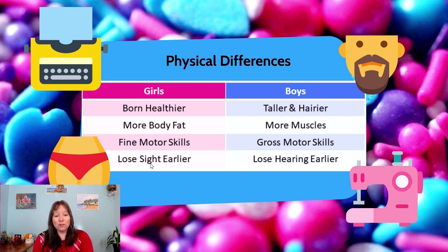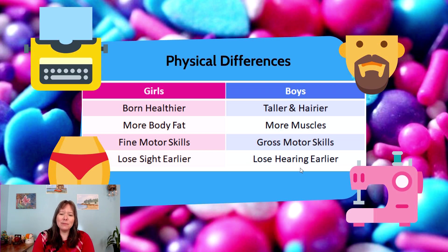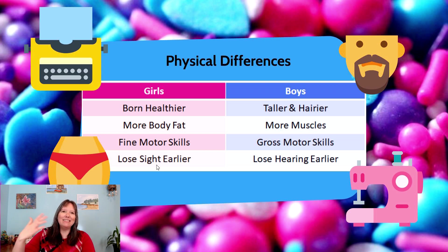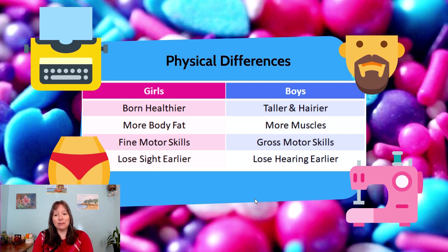Girls tend to lose their sight earlier and boys tend to lose their hearing earlier. This may have something to do with the fact that men tend to work in louder industries with machines and factories, while girls may use more reading and watching children, straining their sight more often. And so those are some of the physical differences.